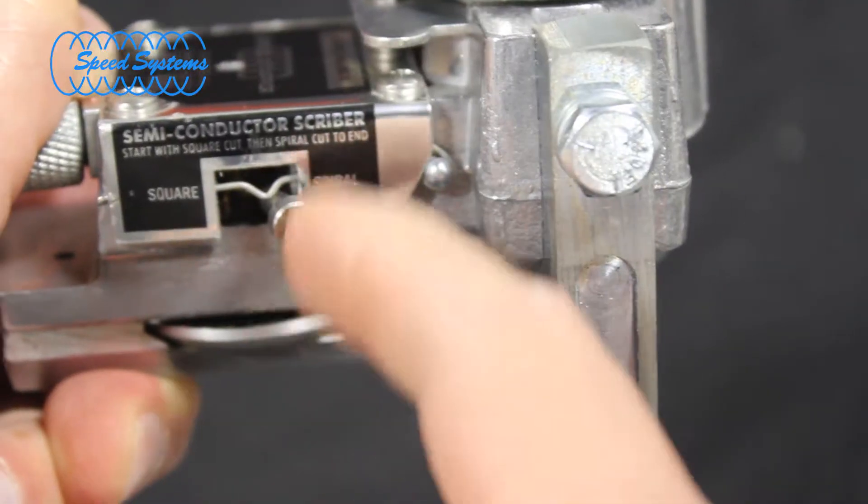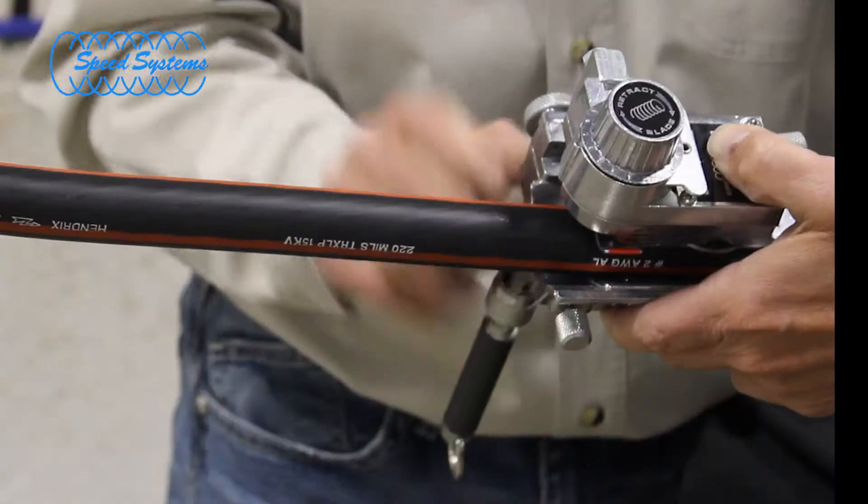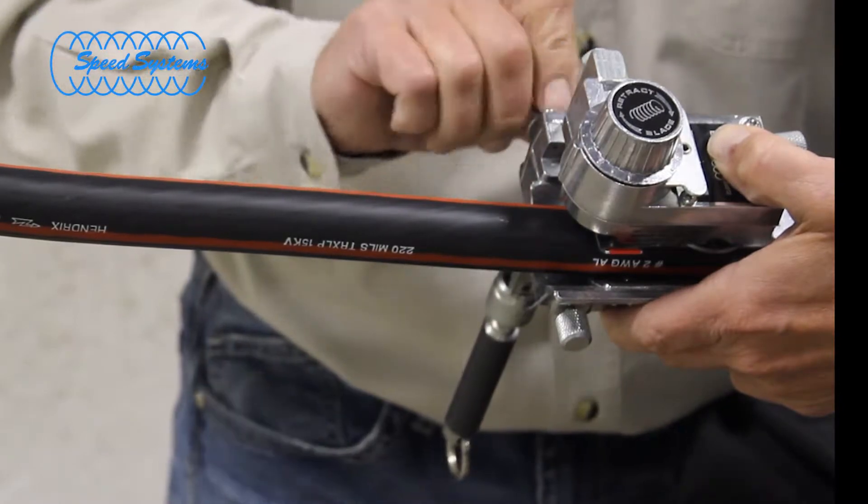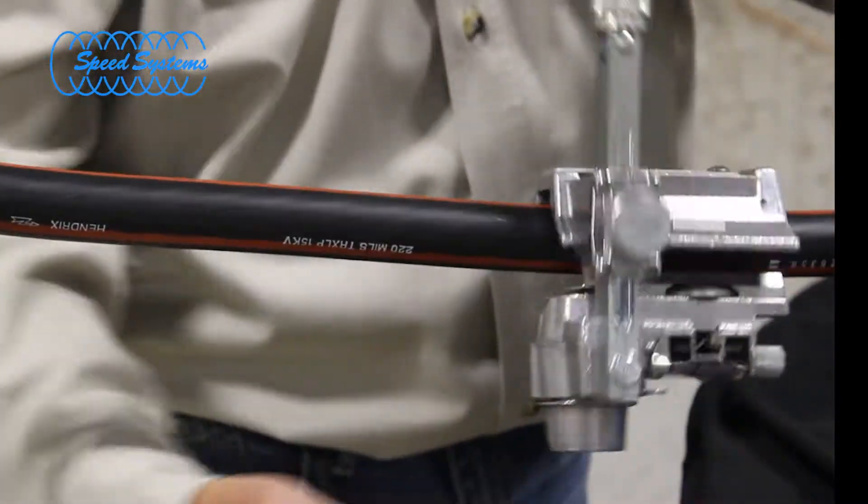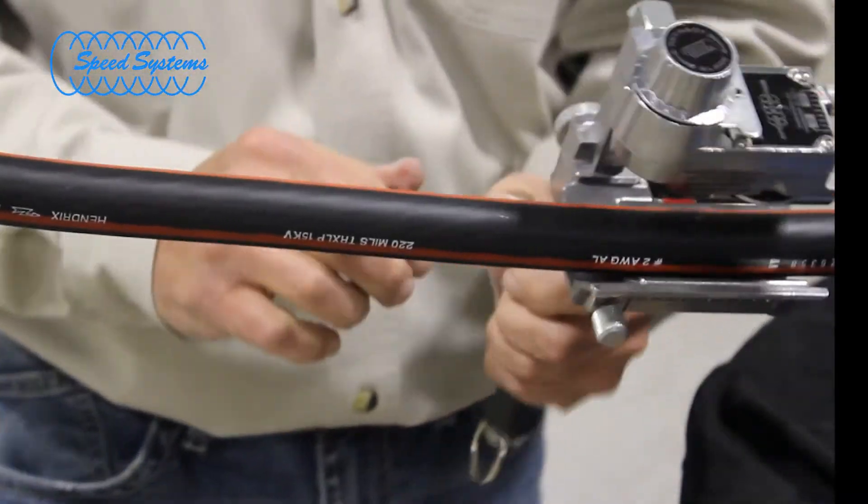Set the scoring blade to the square-cut position and place the tool on the cable at the strip-back mark. Rotate the tool around the cable several times to score a ring cut around the outer jacket and remove the tool from the cable.